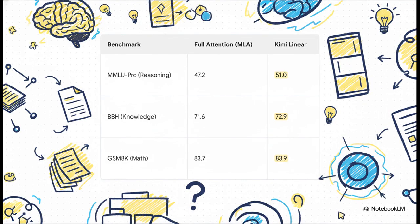And just to prove Kimi Linear isn't a one-trick pony, look at this table. You might think, okay, these efficiency gains only matter for huge documents. But check out this data. On standard, short context tests for reasoning, knowledge, and math, it consistently outperforms the standard model. This thing is an all-around upgrade.